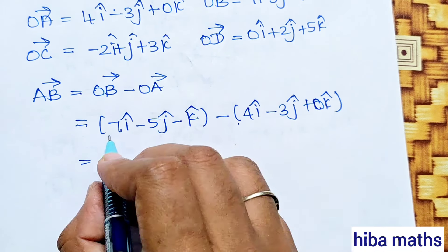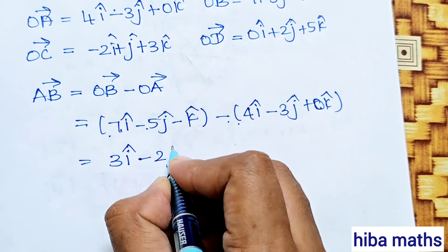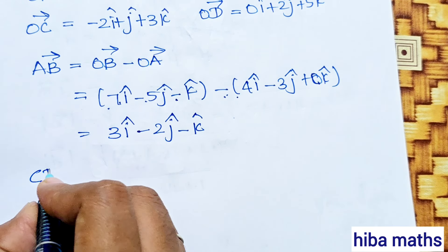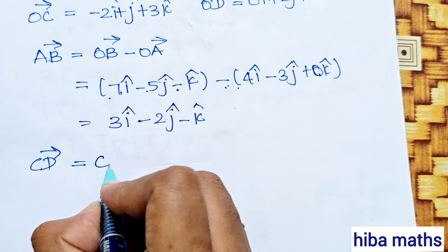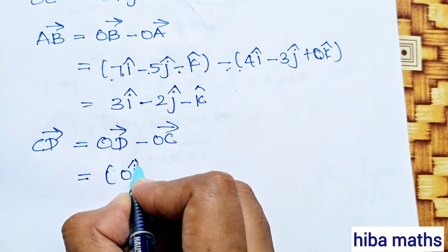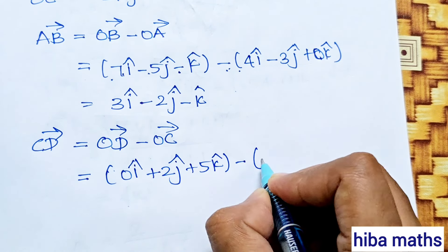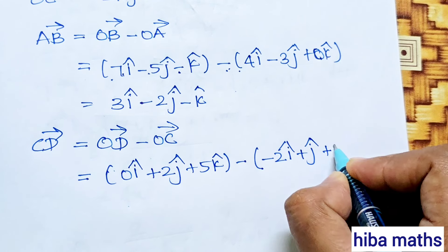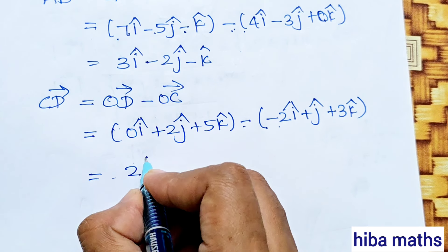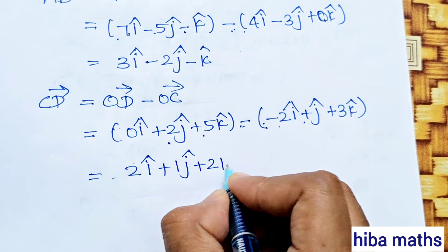AB vector equals OB minus OA: coefficients of i give 7 minus 4 equals 3i, j gives minus 5 minus minus 3 equals minus 2j, k gives minus 1 minus 0 equals minus k. So AB vector is 3i minus 2j minus k. CD vector equals OD minus OC: 0 minus minus 2 gives 2i, 2 minus 1 gives j, 5 minus 3 gives 2k. So CD vector is 2i plus j plus 2k.